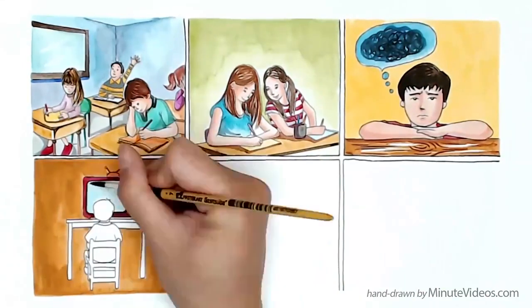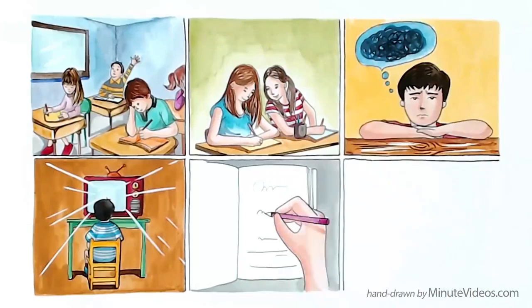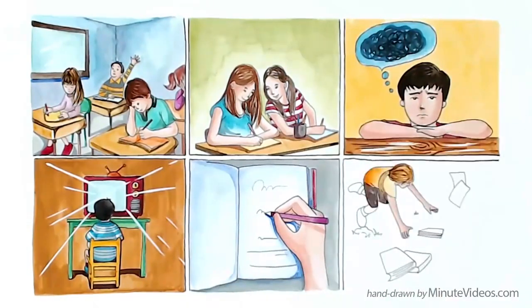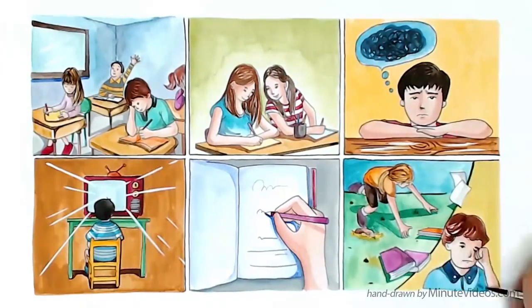They look at things really close up. They execute handiwork poorly and their handwriting is extraordinarily bad. Sometimes kids even walk clumsily or show some more explicit symptoms, like tearing or itching of the eyes.